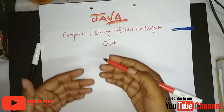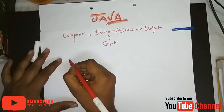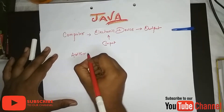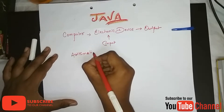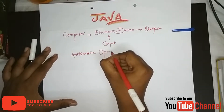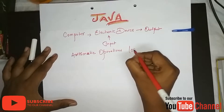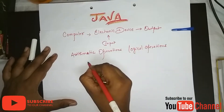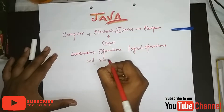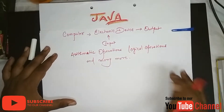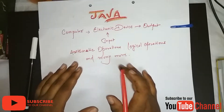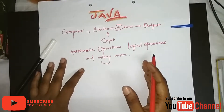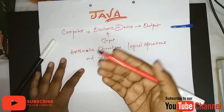So what can we do with a computer? We can do arithmetic operations, logical operations, and many more. Obviously, if we want to get proper output or proper results from the computer, we need to give some proper input to it.